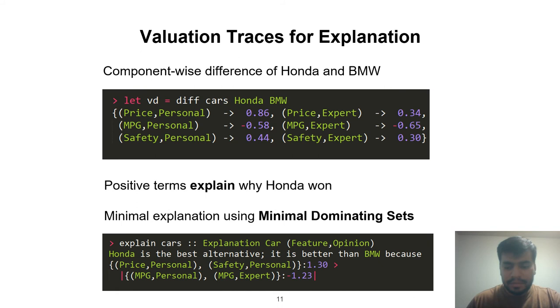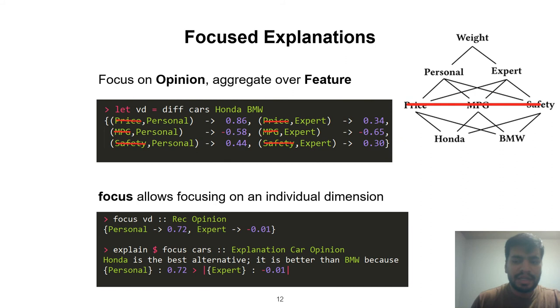The explanation that we saw on the last slide was unsatisfactory because it consisted of components from two different levels: feature level and the opinion level. If we wanted, we could simply focus on the opinion level and aggregate over the feature level. If we did that, we got a personal value of 0.72 and an expert component value of minus 0.01. This tells me that although experts preferred BMW, personal preference was what led to the selection of Honda. Focus is a function that focuses on the dimension based on this type annotation. We can also provide the focus value to the explain function that can provide explanation in terms of the focus value.